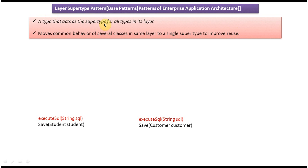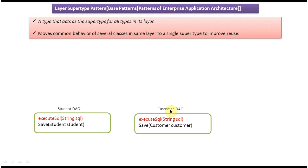We will see one example so that you will understand these sentences. You can see StudentDAO and CustomerDAO. StudentDAO has a method to save student information, and CustomerDAO has a method to save customer information. You can also see another method called executeXQL — it is present in both StudentDAO and CustomerDAO. This common method executes based on the SQL provided and returns the result to the caller.